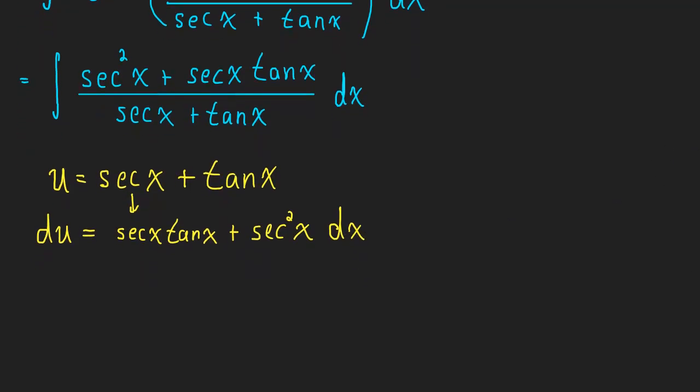And now we have an integral we can work with when we make that substitution. The entire numerator is secant squared x plus secant x tangent x dx. That whole thing just becomes du. The whole numerator is just simply u, and now we have a very simple natural log rule.